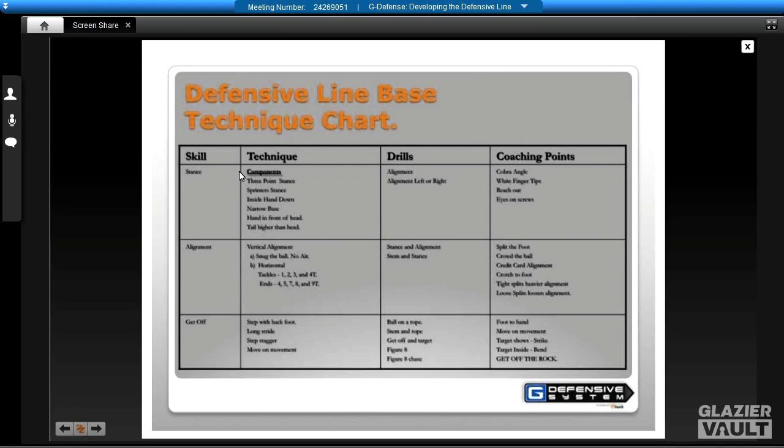If you take a look at stance right now, I'm just going to go over coaching points. Some of the things we like to talk about is the cobra angle where we have that nice angle. We like to have white fingertips, weight on the fingertips. Another term we like is eyes on the screen. Those are coaching points and we want to define these.